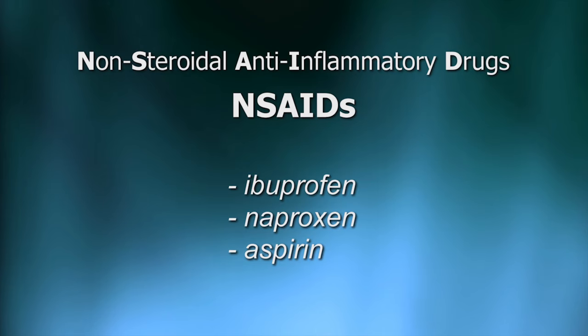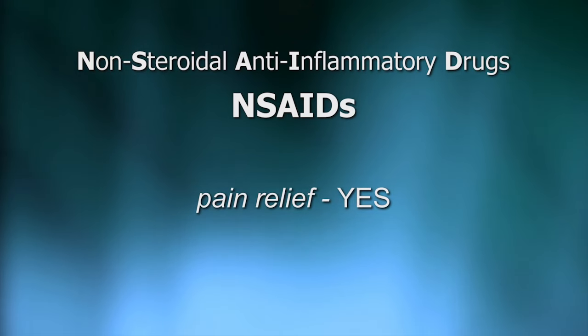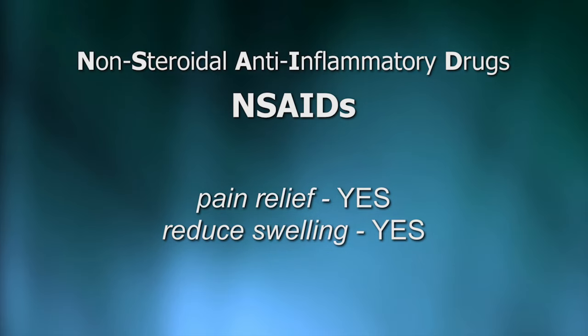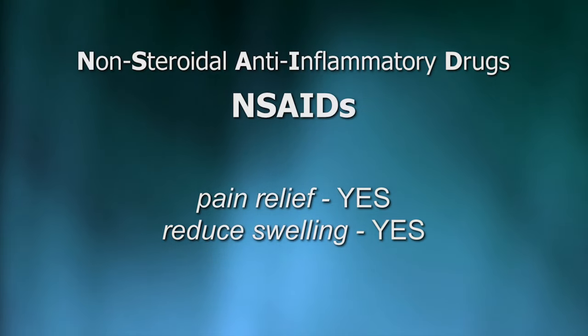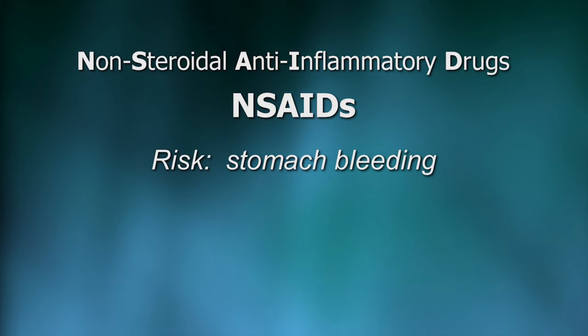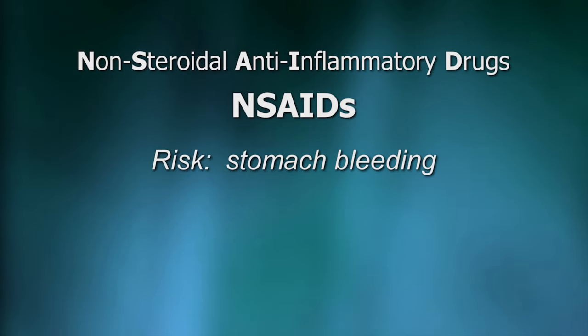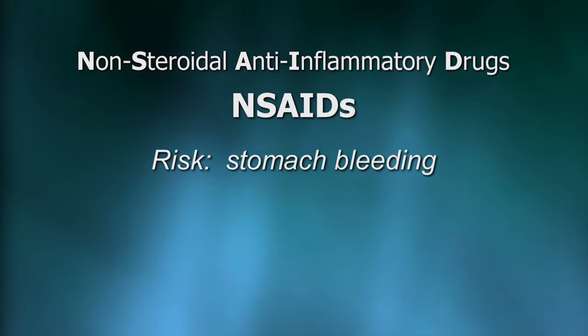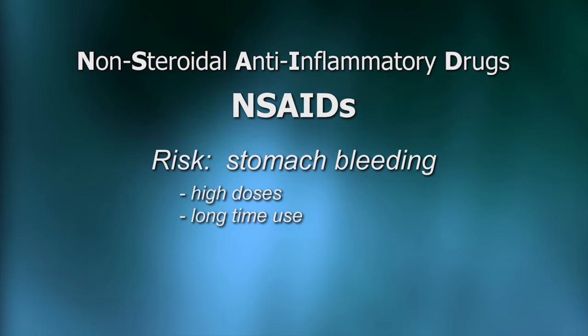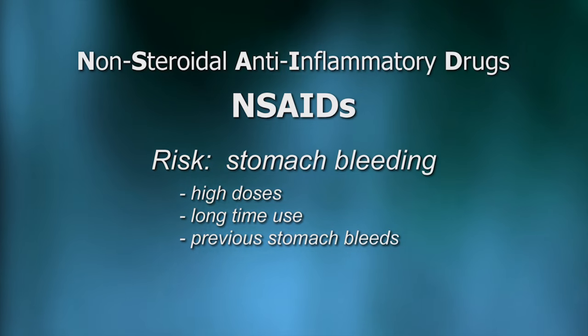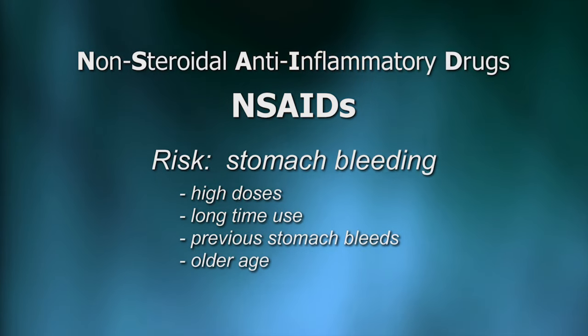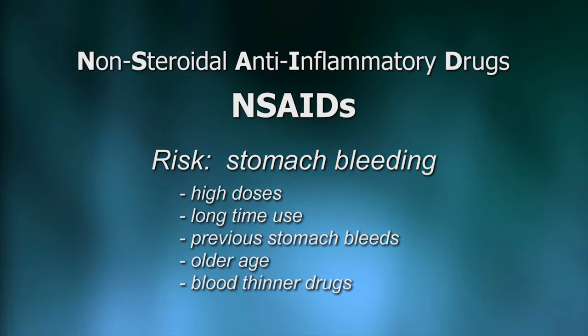NSAIDs are effective at relieving pain, and they also reduce inflammation and swelling. However, these medications have more risks than Tylenol. One of the most serious is that they can be hard on the stomach and can cause stomach bleeding in some people. The people at most risk for stomach bleeding are those who take high doses, use them for a long time, have had stomach bleeds before, are older — especially those over age 75 — or are taking blood thinner drugs like Coumadin or aspirin to prevent blood clots. Stomach bleeds can be very serious and even life-threatening. People in these risk groups should only take NSAIDs under a doctor's supervision.